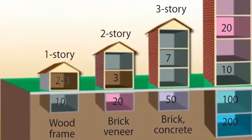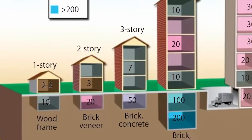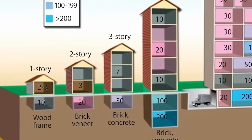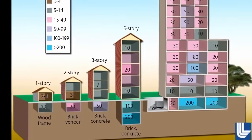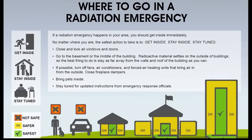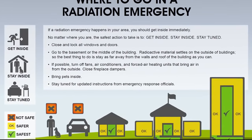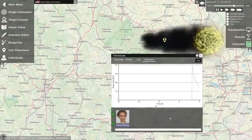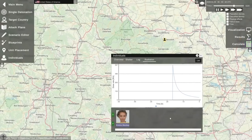You can protect yourself from radioactive fallout by hiding in a building. The goal is to put as much shielding between you and the fallout particles as possible. Basements or the innermost parts of buildings offer the best protection. The fallout radiation decreases tenfold within the first seven hours and one hundredfold within the first two days.